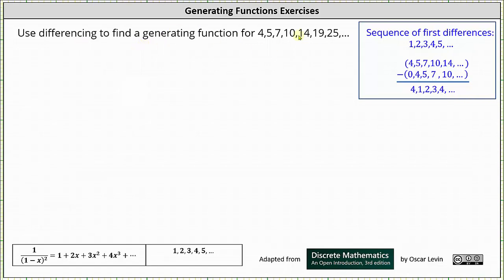From here, if we take the given sequence 4, 5, 7, 10, 14, and so on, shift all the terms right one position and subtract, we get the sequence 4, 1, 2, 3, 4, 5, and so on. So even though this first term doesn't fit the sequence we want, it will not prevent us from determining the generating function.